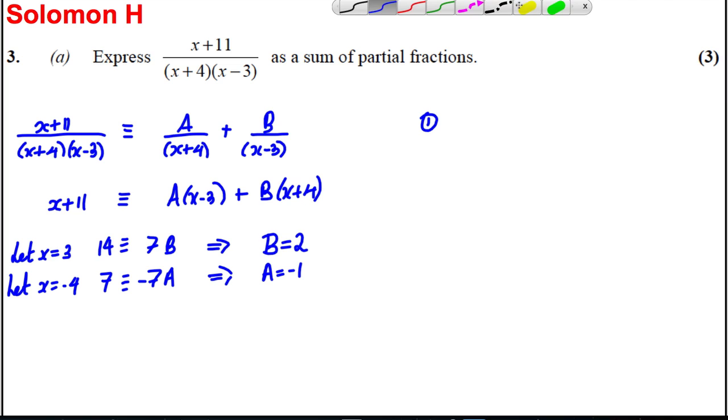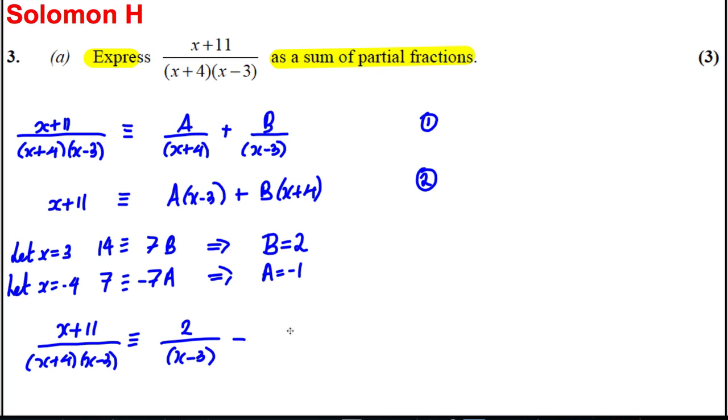Now remember to express that as a sum of partial fractions at the end. This would usually get a mark in the exam, the real exam. So make sure at the end we write that (X + 11) / [(X + 4)(X - 3)] is the same thing as 2/(X - 3) - 1/(X + 4), the first part done.